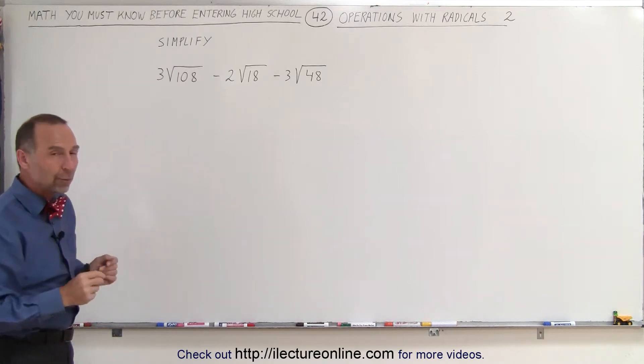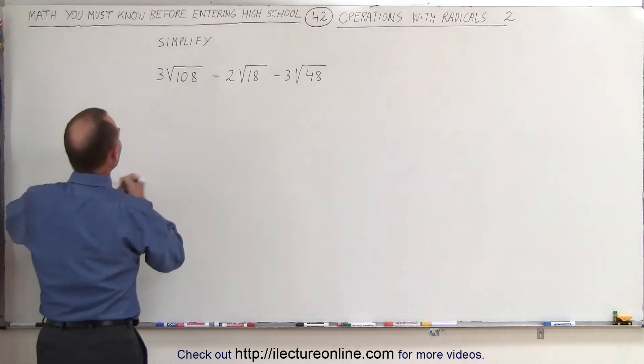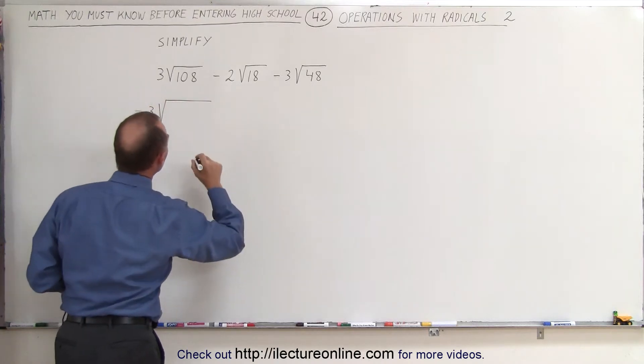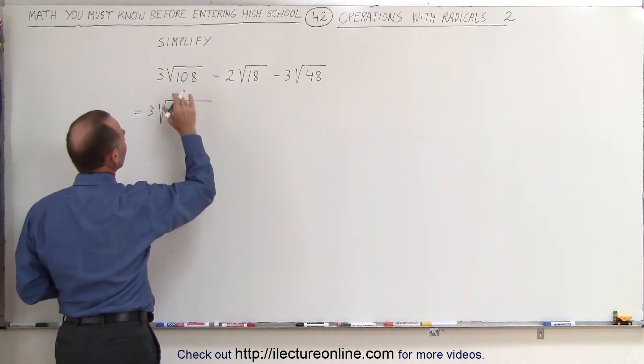If we take a look at these numbers, we can rewrite them as follows. We can say that this is equal to 3 times the square root of, let's see here, that's 2 times 54